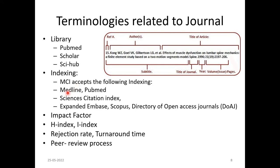MEDLINE is an indexing agency for PubMed. We also have Science Citation Index Expanded, EMBASE, Scopus, and DOAJ — the Directory of Open Access Journals. These are the indexing agencies accepted by the NMC, the National Medical Commission of India. So look for journal articles under these indexing agencies.